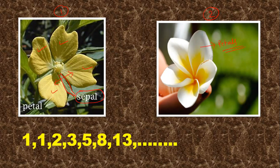The Fibonacci sequence says that in the first type of flower, the number of petals will always follow Fibonacci numbers. That means you cannot find any flower of this type with 4 petals, because 4 is not a Fibonacci number. Similarly, you cannot find a flower of this type with 6 or 7 petals.